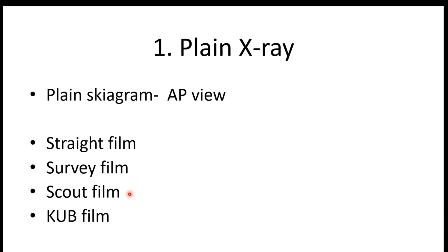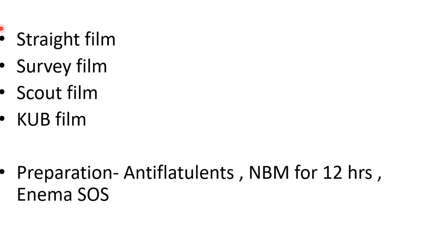A scout film is taken when a patient is bedridden — admitted in the ward or ICU — and is not able to go to the radiological department for the X-ray. In that case, we move the X-ray machine to the patient's ward and take the X-ray. Such a film is known as a scout film. The last type is KUB, which stands for Kidney, Ureter, and Bladder — taken when we focus only on the urinary tract.